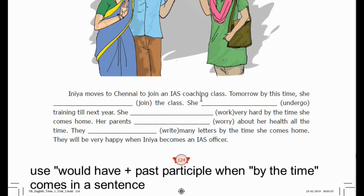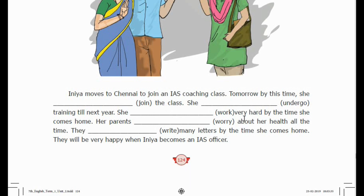So for Future Perfect Tense, use 'will have' or 'shall have.' For example: She would have worked very hard by the time she comes home. The parents will have to worry about her health all the time. Use 'will have' or 'would have' followed by the past participle form of the verb to form the Future Perfect Tense.